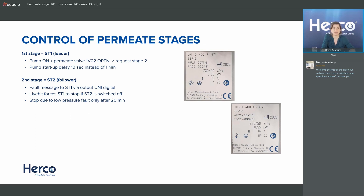In the second stage, there's also a delay on the low-pressure fault: it stops only after 20 minutes — you can get four low-pressure fault messages before it stops at the fifth. This gives you time to properly set up both stages and get them running smoothly. The second stage can send a fault message to the first stage — obviously, if the second stage has a fault, the first stage should stop too. We use the universal digital output for that: the output is connected with a live bit, and if that output goes dead — meaning the second stage is switched off — the first stage will switch off immediately as well.